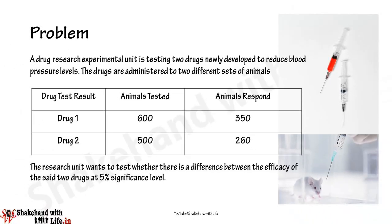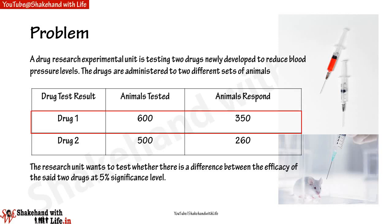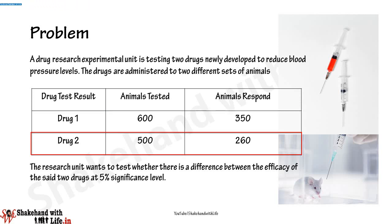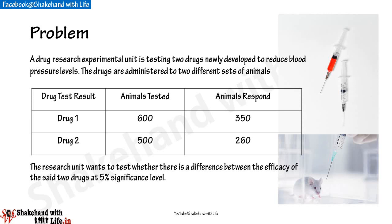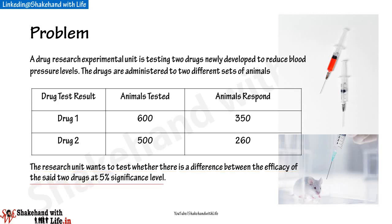Now let's take a practical problem to understand the application of hypothesis testing for the difference of proportions. A drug research experimental unit is testing two newly developed drugs to reduce blood pressure levels. The drugs are administered to two different groups of animals. In group one, 350 of 600 animals tested respond to drug one. In group two, 260 of 500 animals tested respond to drug two.